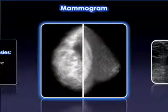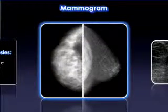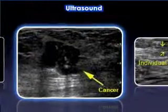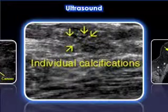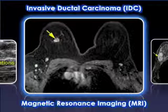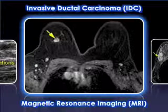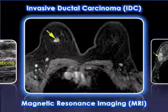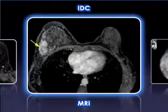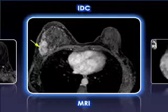For some women, the mammogram reveals a mass that must be diagnosed further. Ultrasonography is especially helpful in distinguishing between a fluid-filled cyst and a dense mass. Magnetic resonance imaging (MRI) is driven by unique technical abilities behind its rapid clinical acceptance. Breast MRI is a non-invasive procedure that uses no ionizing radiation and no radioactivity.